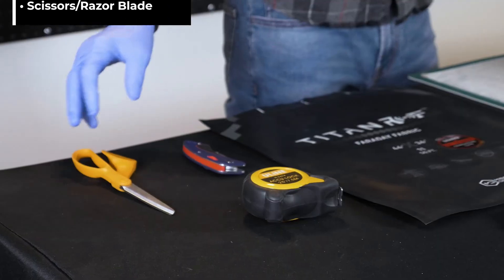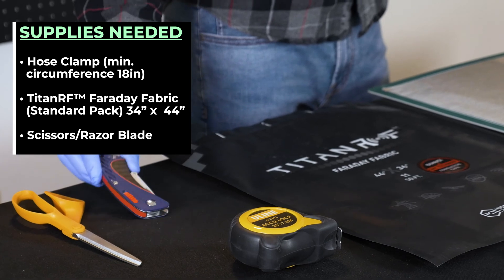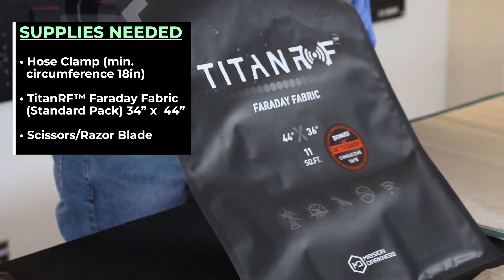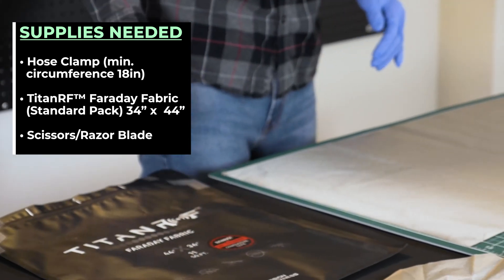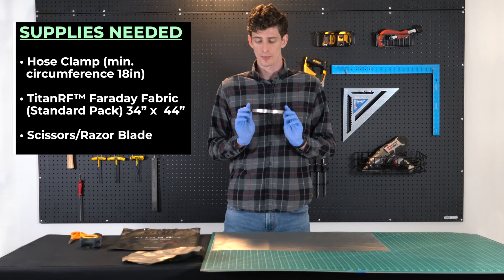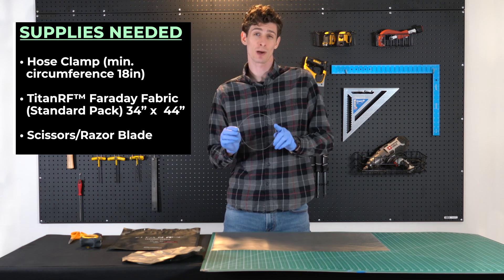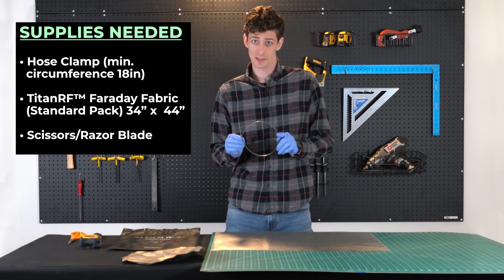We're going to need a pair of scissors, a razor blade, and some Titan RF Faraday fabric, and we'll also need a hose clamp that'll fit your meter. Now the hose clamp you choose, you'll want to make sure you don't get one that's too big or too small because you'll want to be able to adjust it once you have it on the meter.